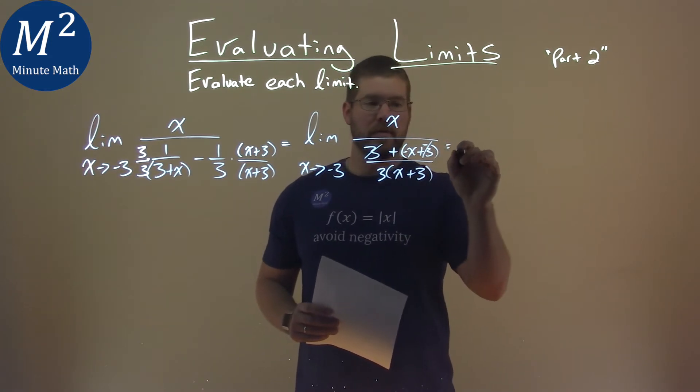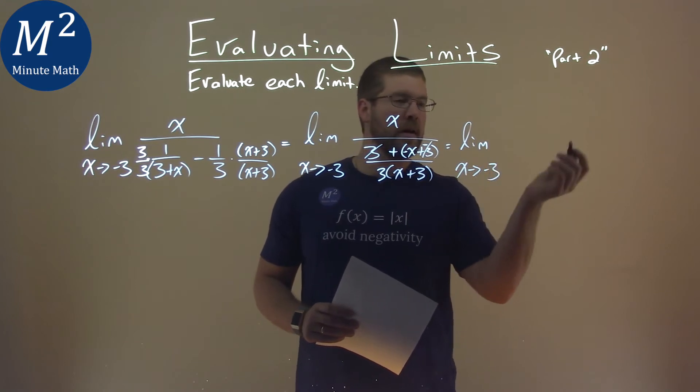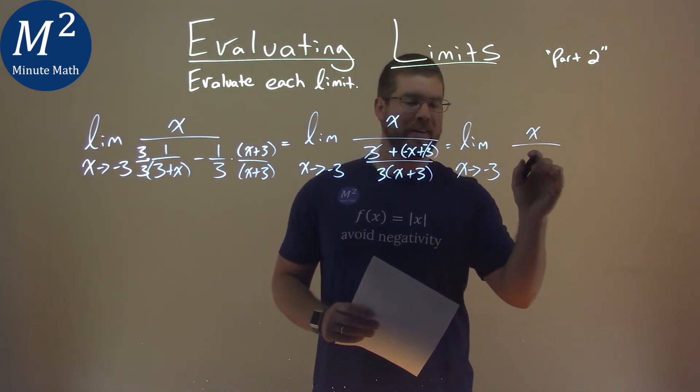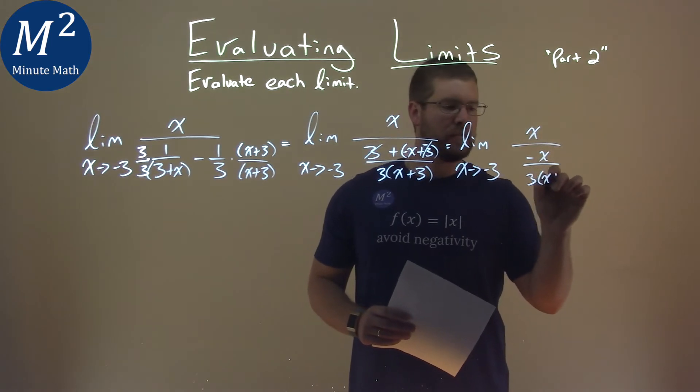And so we're left with now the limit as x approaches negative 3 of x over negative x over 3 times (x plus 3).